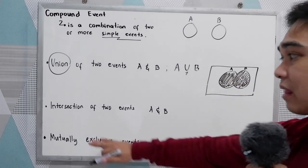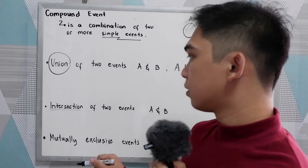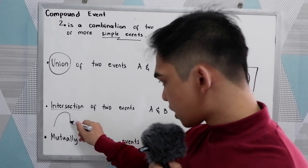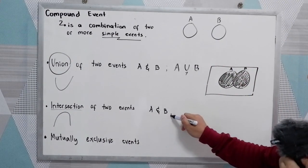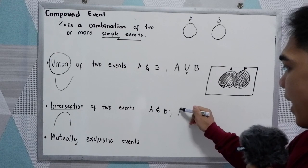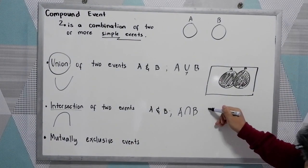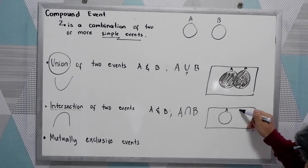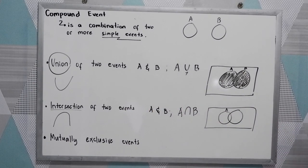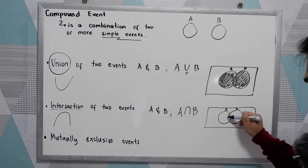Now let's have the intersection of two events A and B. For intersection, we use the intersection symbol, and for union we use the U symbol. The intersection is denoted by A intersection B. To illustrate in our event diagram, if we have event A and event B, their intersection is what is common in both A and B.